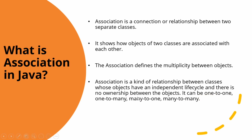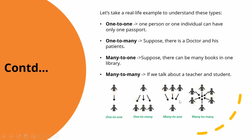Association can be one-to-one, one-to-many, many-to-one, or many-to-many. Let's take a real-life example to understand these types. One-to-one: the best example is that one individual can have only one passport. This is a one-to-one relationship between the person and the passport.